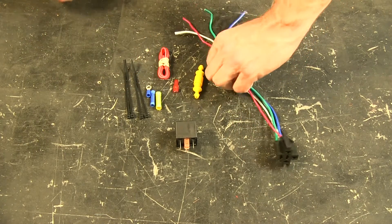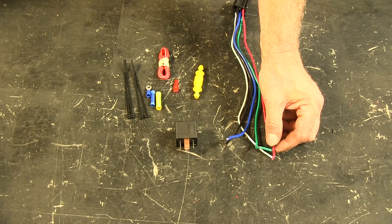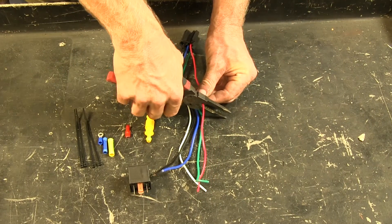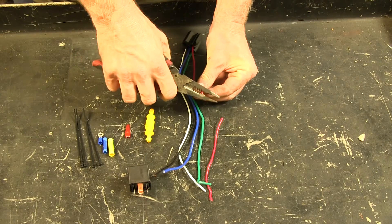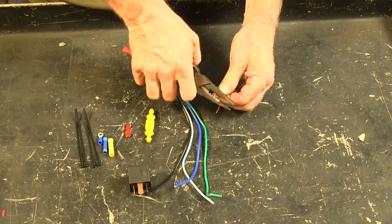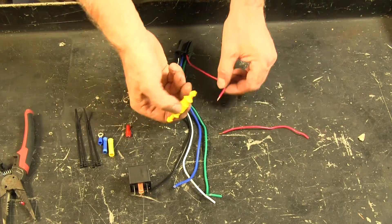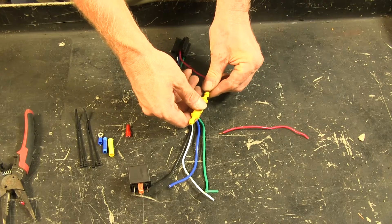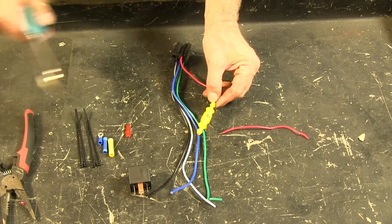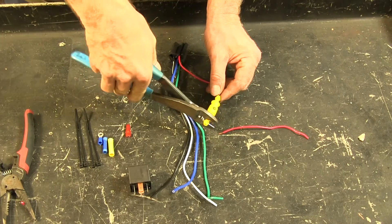We'll go ahead and work on our wire harness here and add our butt connectors as needed. We'll work with the red wire first. We're going to add our fuse holder to this, so we're going to cut it in half, strip the wires back. Okay, fuse holder, slide it onto the wire, crimp right here. Same thing on the other side.